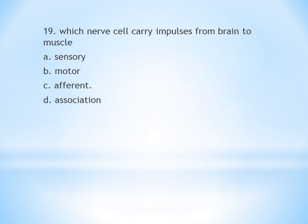Which nerve cells carry impulses from the brain to the muscle? A. Sensory. B. Motor. C. Afferent. D. Association. Sensory neurons carry impulses towards the brain. Motor neurons carry impulses away from the brain to the muscles. The answer is B, motor.